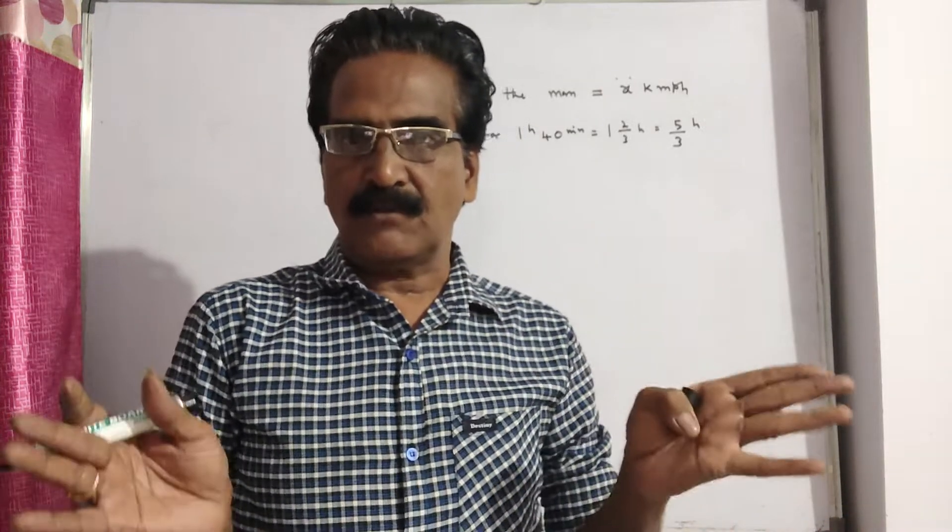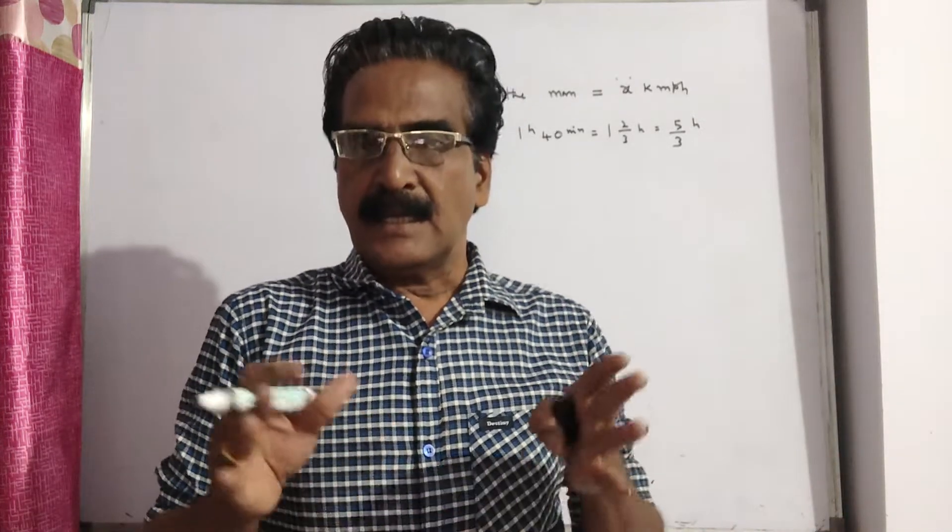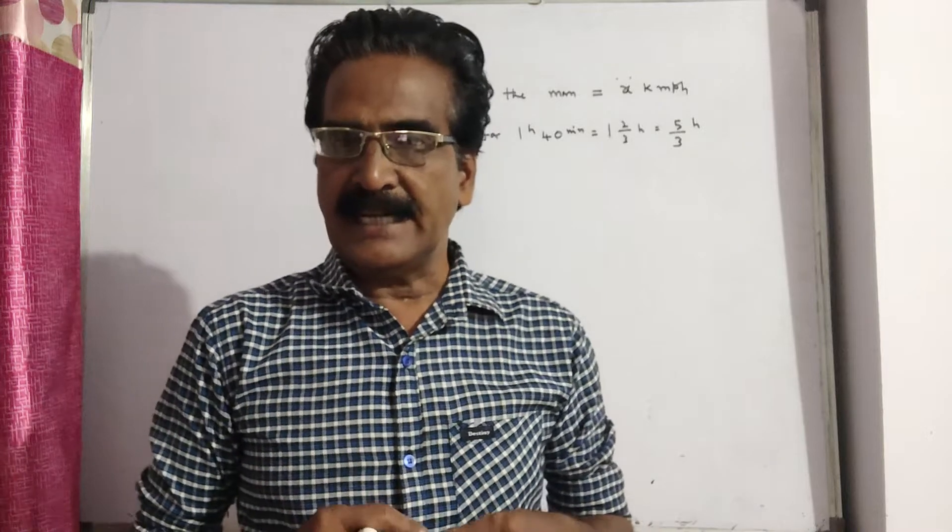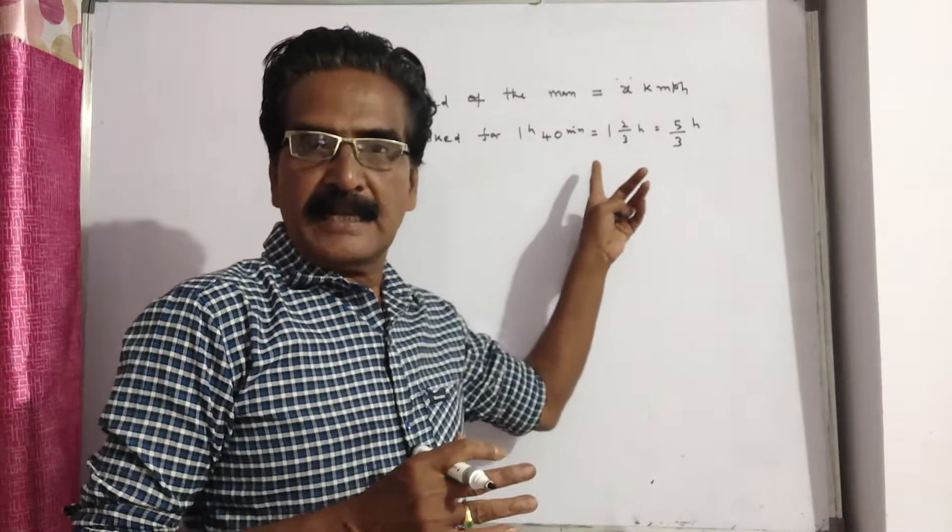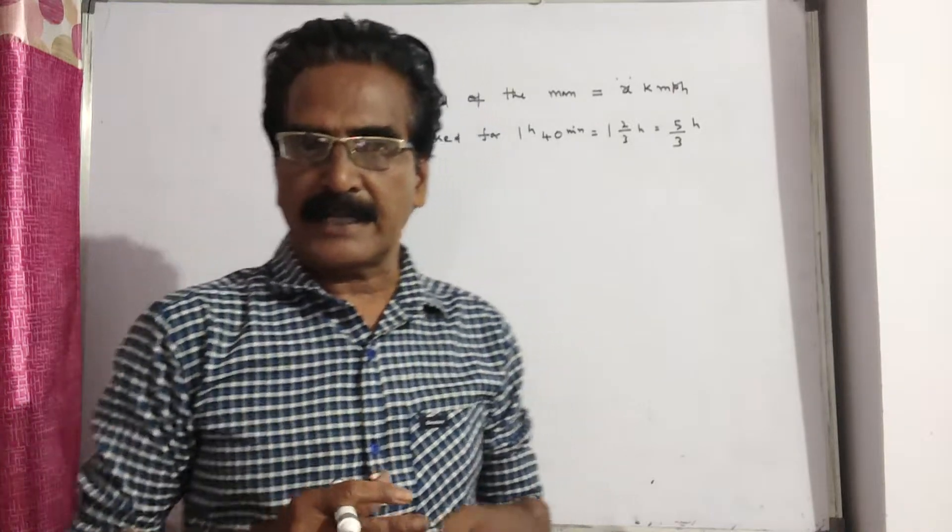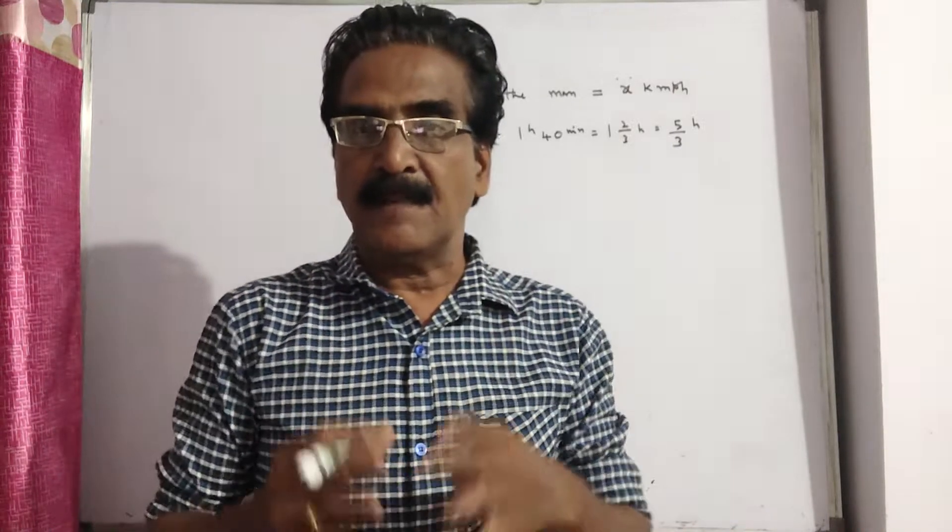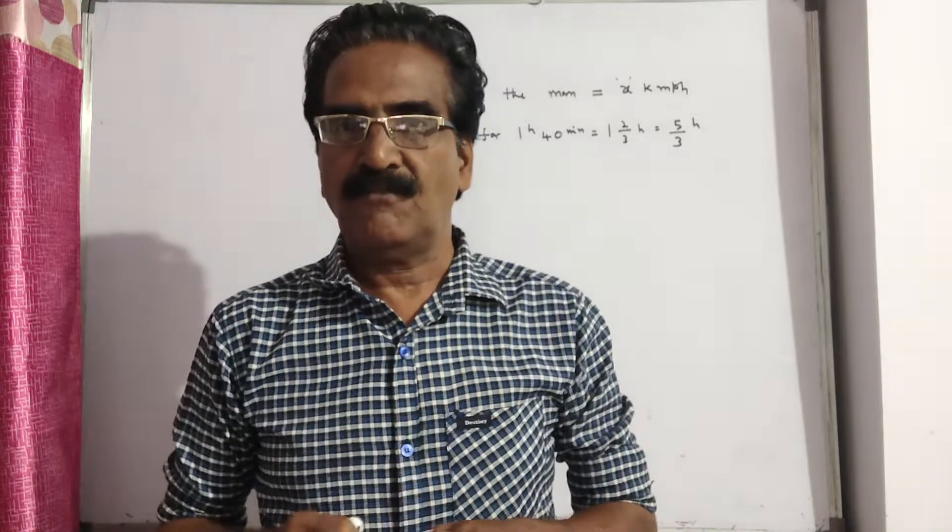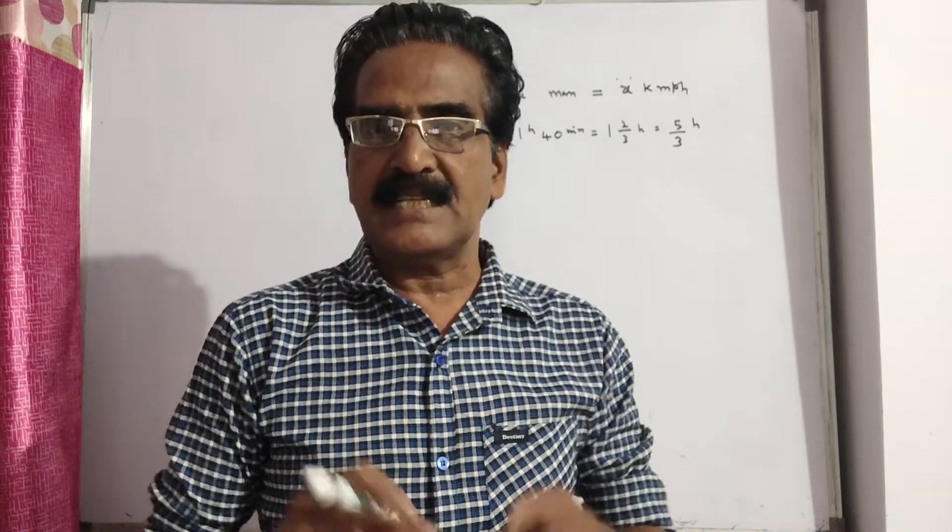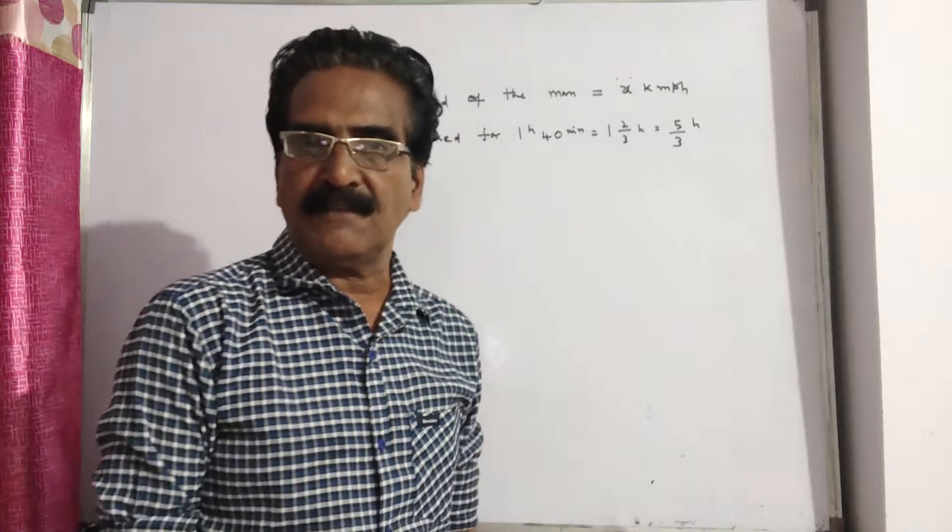See friends, while covering the distance of 24 kilometers, a man noticed that after walking 1 hour 40 minutes, he covered 5 by 7th of the remaining distance. What is the speed of the man?